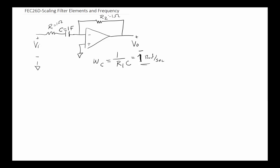In this video we're going to cover a concept called scaling. Scaling can work two ways, and we're going to use this example — a simple high-pass filter. It's got a one ohm resistor, one farad capacitor, and one ohm resistor at the feedback level. The cutoff frequency is one over R1C, which is one ohm times one farad, giving us one radian per second.